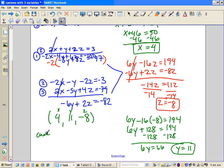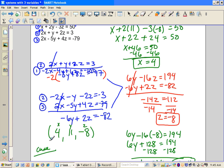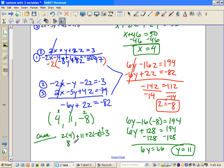If we want to do a quick check, let's maybe use just the second equation. Is 2 times 4 plus 11 plus 2 times negative 8 equal to 3? 2 times 4, that's 8, plus 11, minus 16. Well, 8 and 11 is 19 minus 16 is equal to 3. So that works.